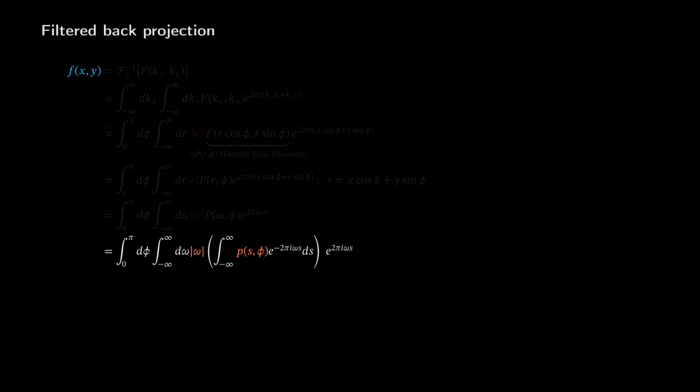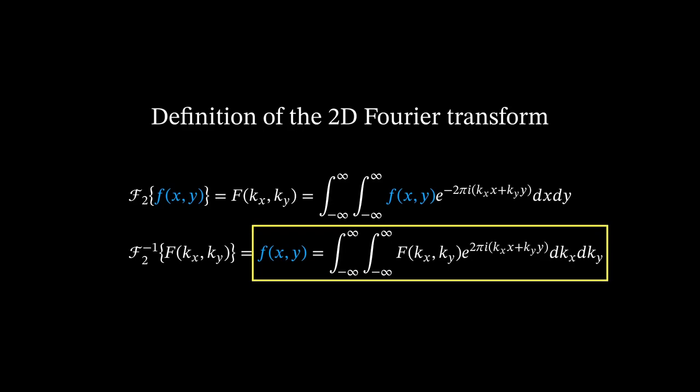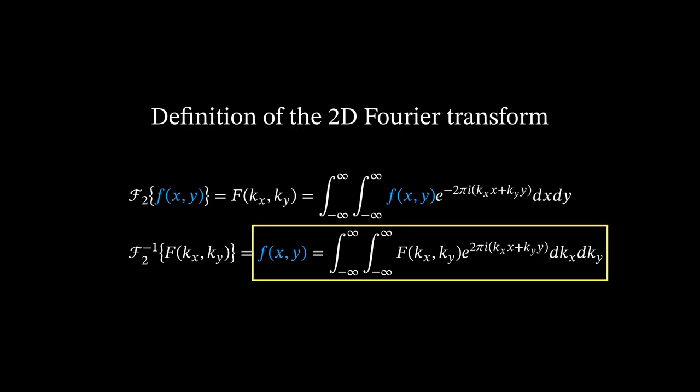As already mentioned, one ingredient of our proof is the 2D Fourier transform of the object function f, which transforms x and y into kx and ky. Vice versa, the inverse Fourier transform looks like this. It contains the mathematical expression for f, which is great for us. Coming back to our proof, we can express f now in terms of the Fourier transform.